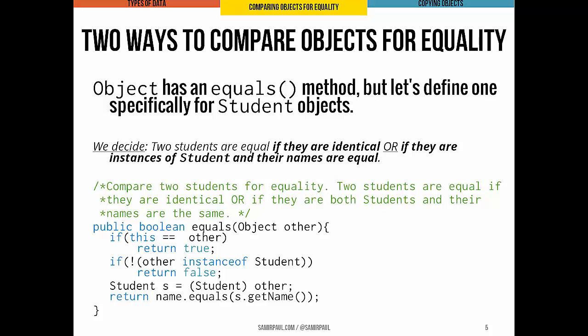We'll consider two students equal if they are identical objects in terms of object identity, or if they are instances of the Student class and their names are equal — those are the two criteria we as developers have decided upon. This method returns boolean and takes as a parameter some object we'll call other. If they have the same identity, we return true. If other is not a student, we return false because there's no way for a student object to equal an object that is not a student.